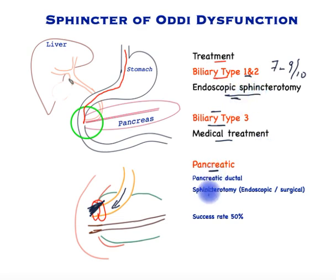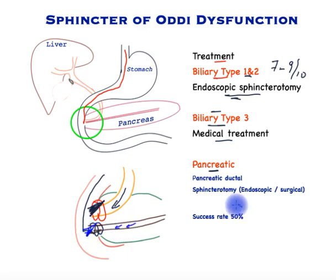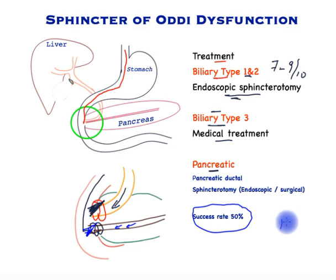Finally, the pancreatic sphincter of Oddi dysfunction. This is not commonly treated and is less well understood. Once a decision is taken to treat this, the treatment is fairly similar to the biliary type — either through an endoscope or through surgery, the opening through the pancreas tube is made bigger so that there is no hold-up to the flow of pancreatic juice. The success rate for this, however, is around 50%. The endoscopic treatments are also associated with a complication rate of between 15 to 20%, and this is not to be taken lightly.